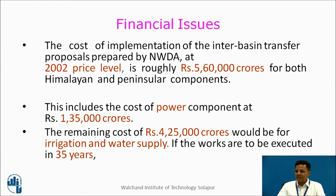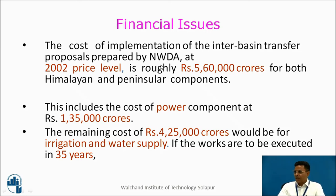Regarding financial aspects: the cost of implementation of NWDA's proposal for interbasin transfer of water for both Himalayan and Peninsular components at 2002 price level was 5,60,000 crores. The present cost in 2020 may reach up to 20 lakh crores. Part of that is the power component and the remaining is required for irrigation and water supply.